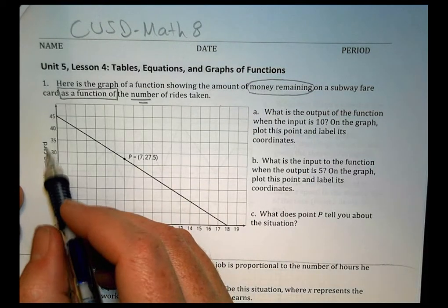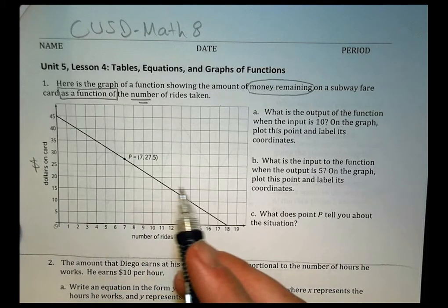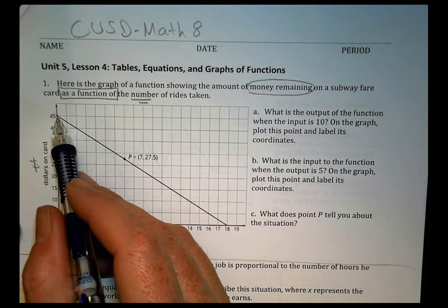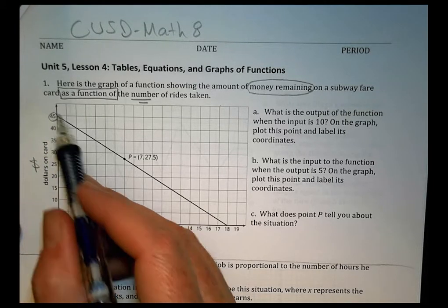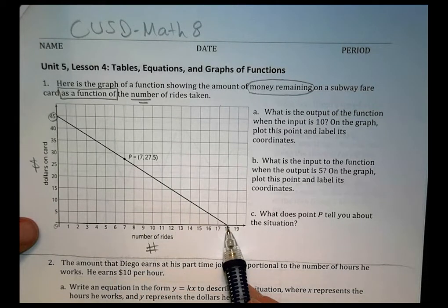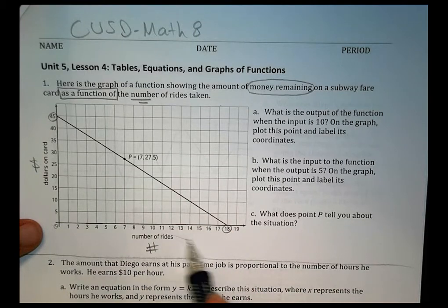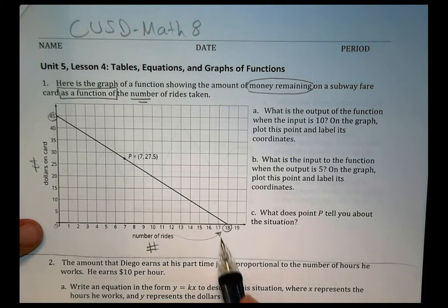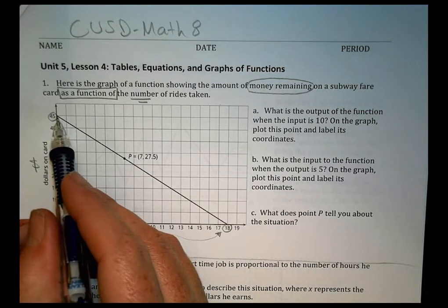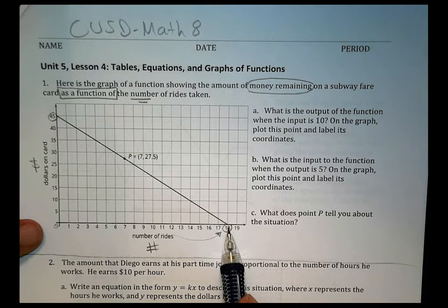So we're looking at the amount of money remaining as a function of the number of rides taken. The amount of money we can see here on this section, here's the start of dollars right there. And we can see the number of rides here. The amount of money this person has on the card starts at $45, and we can see it decreasing with the number of rides until it gets down to $0.